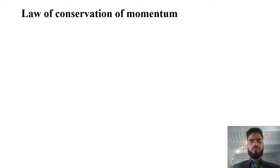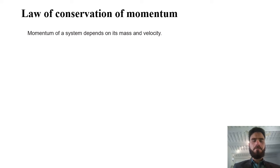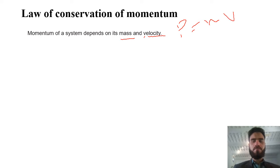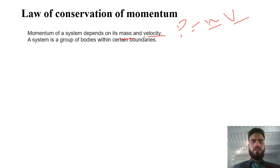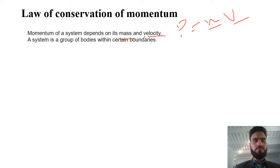Law of conservation of momentum. First, what is momentum? Momentum of a system actually depends on mass and velocity of the bodies. We have already derived that P is equal to MV. So, over here, mass and velocity. But what is the system? We use the term system. At this stage, you have to make sure and you should have a clear idea about the system — what will be the system in the rest of the discussion.